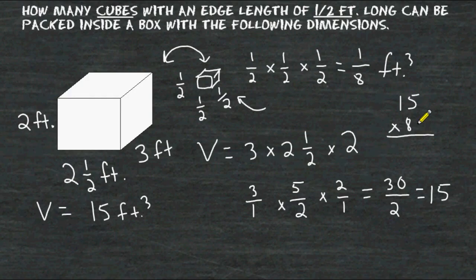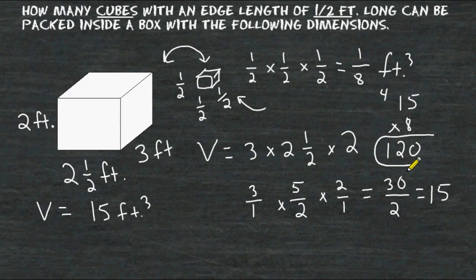So we have to take fifteen and multiply that by eight. Eight times five is forty — carry the four. Eight times one is eight, plus that four is twelve. So it would take one hundred and twenty cubes with an edge length of half of a foot to completely pack the shown box with the given dimensions.